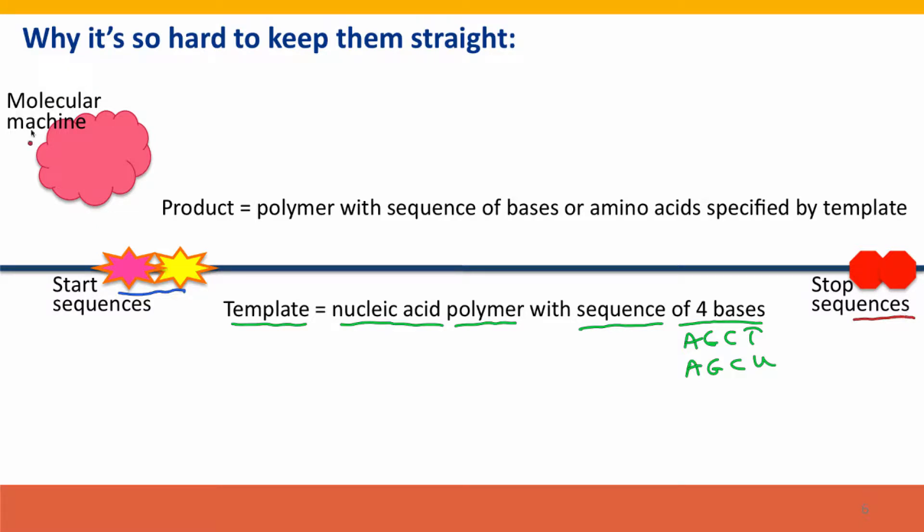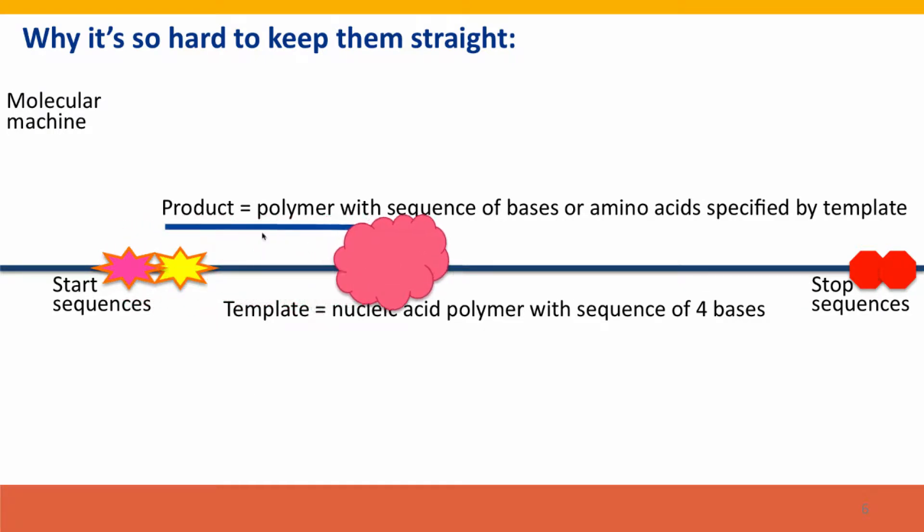There's a molecular machine in every case - in transcription, translation, and DNA replication. There's a molecular machine which is usually a complex of a large number of highly sophisticated proteins, and sometimes with RNA as well. And this machine is going to move along the template and it's going to read the base sequences in the template and use that information to synthesize a new polymer, whose sequence of bases or amino acids is specified by the template.